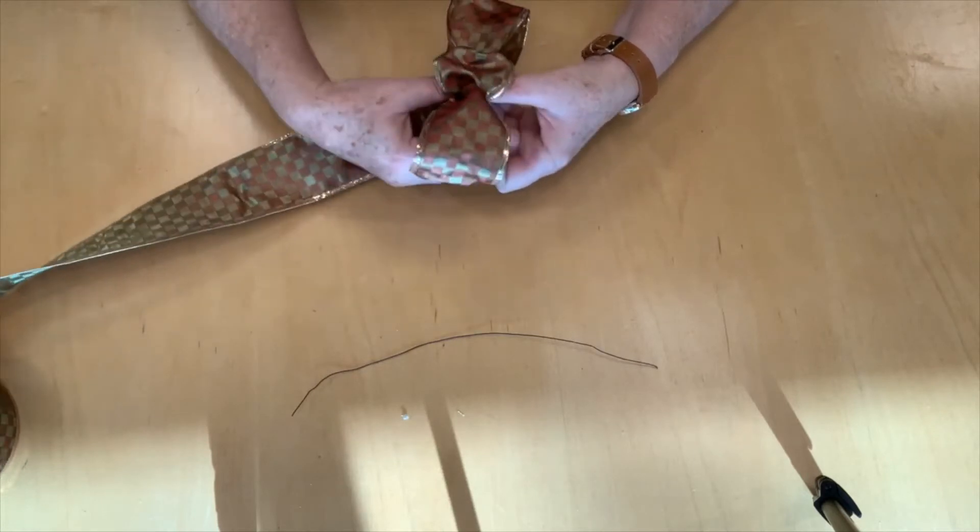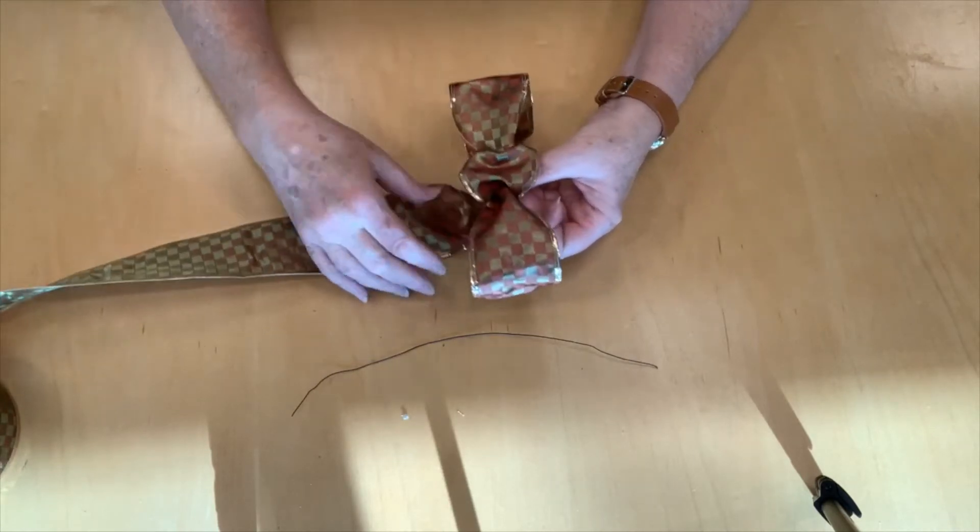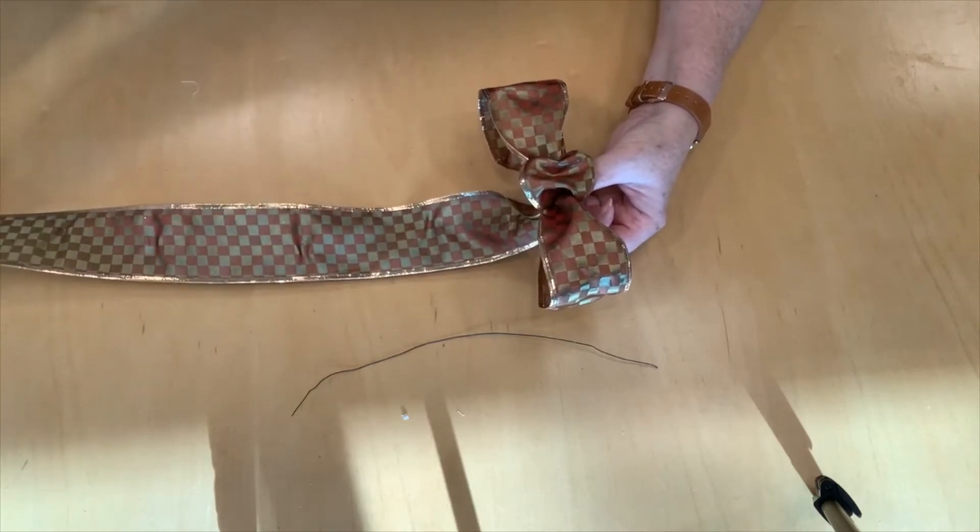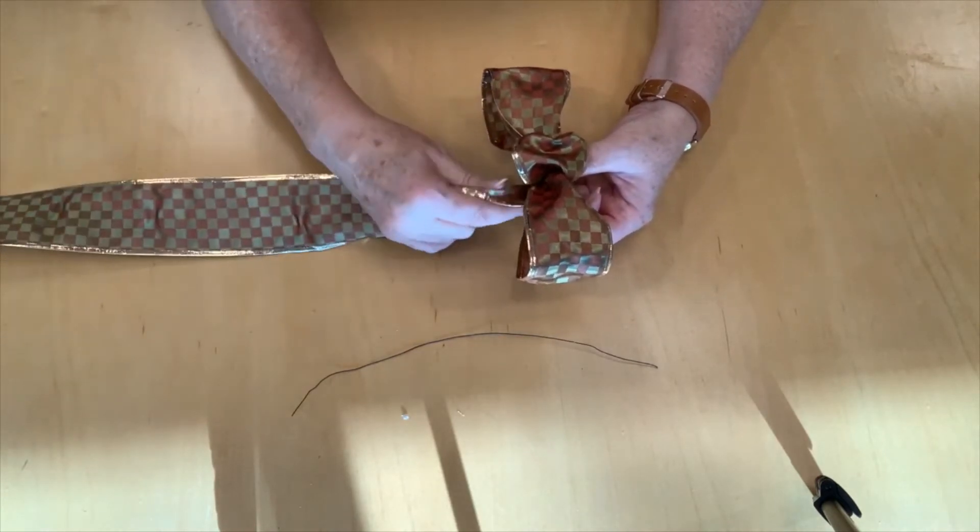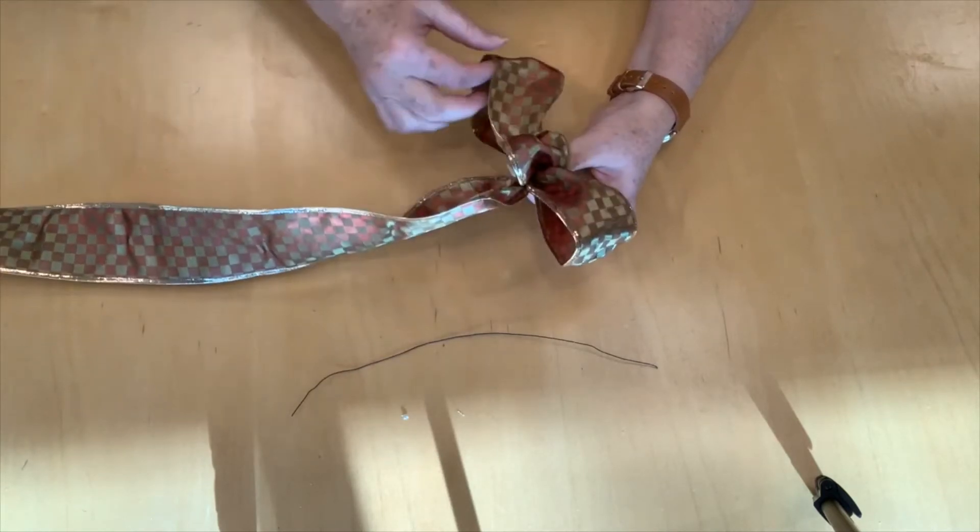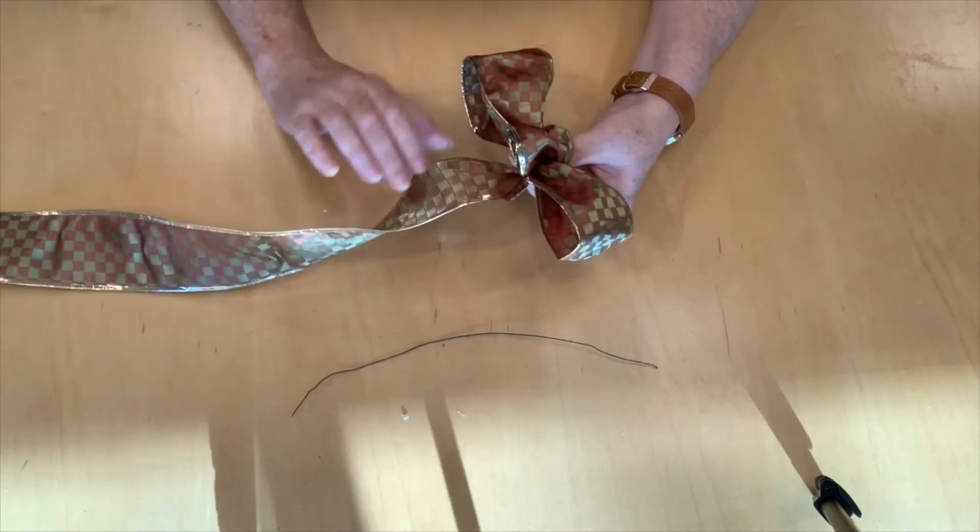Like I say, it looks really spectacular, but there's not that much to it. So I'm going to keep looping and twisting and pinching until I've got six of these leaves and that will make my bow.